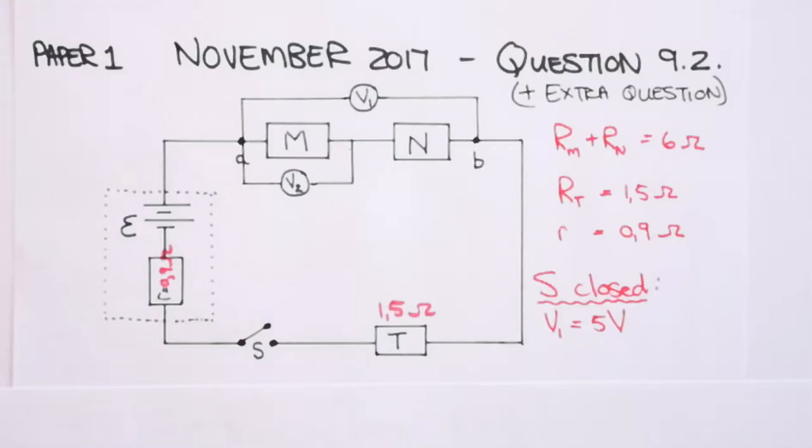They tell you the effective resistance between points A and B in the circuit is 6 ohms. So from A to B we have a resistance of 6 ohms. So I said R of M plus R of N equals 6 ohms. They are in series with each other, so when you add up their resistances you will get 6 ohms.